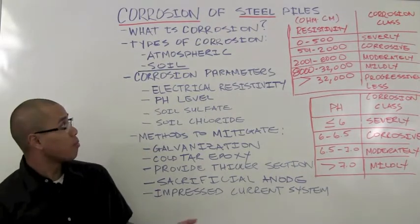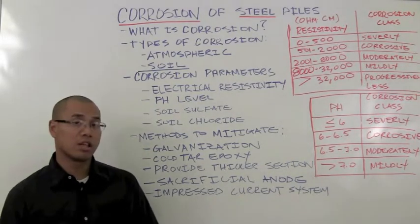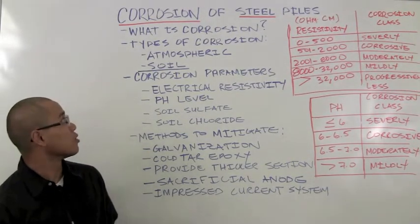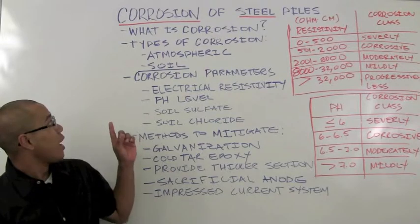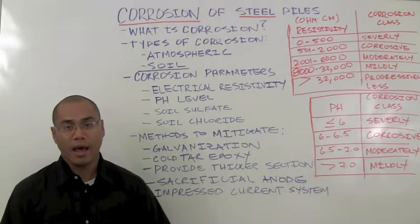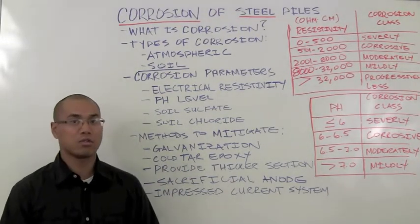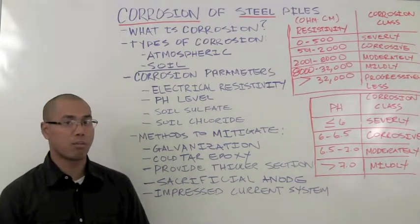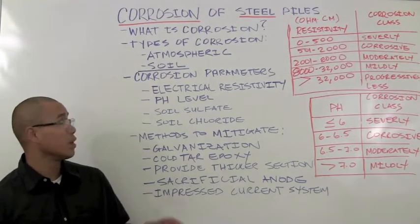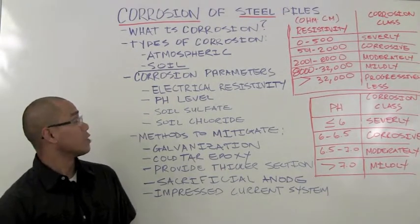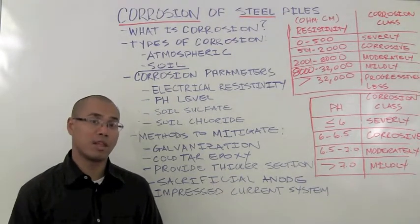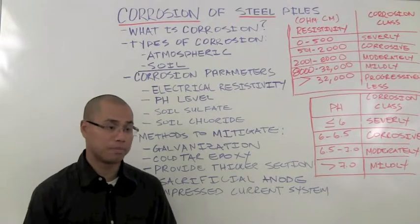Steel piles are typically subjected to two different types of corrosion: atmospheric corrosion and soil corrosion. Atmospheric corrosion occurs on the portion of the pile that is above grade, and soil corrosion occurs on the portion of the pile that's below grade.